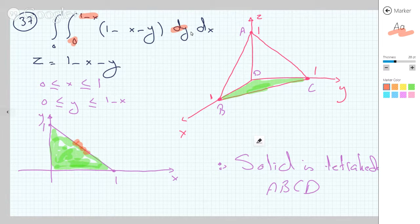So this solid, as you can see, is just a tetrahedron that has vertices of 1, 0, 0, 0, 1, 0, and 0, 0, 1.